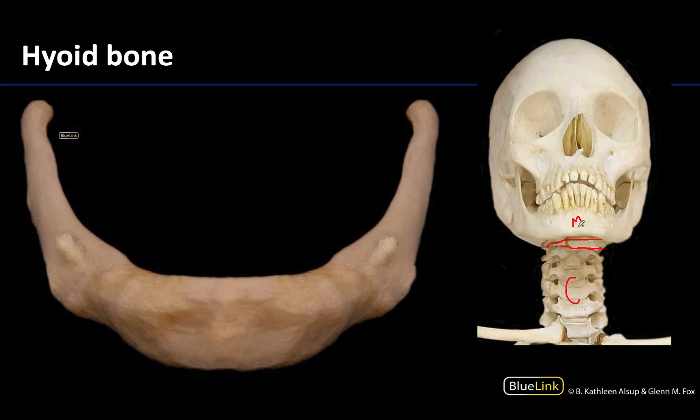It will be between the mandible and the thyroid cartilage of the larynx. So if you're palpating your own neck, you typically feel the thyroid cartilage as it projects the most anteriorly, but if you go a little bit higher you can feel the hyoid bone.